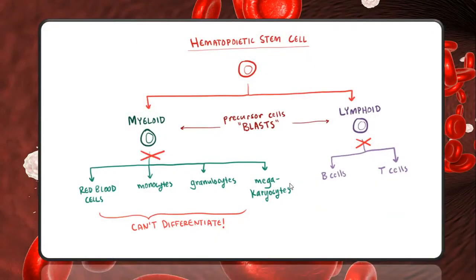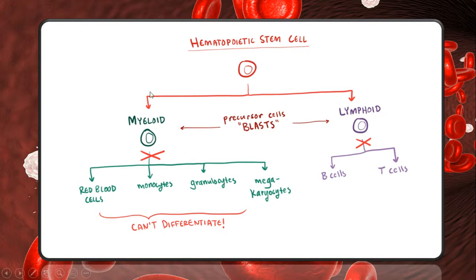Hematopoietic stem cells differentiate into myeloid stem cells or lymphoid stem cells — sometimes we call these precursor cells blasts. Myeloid stem cells further differentiate into red blood cells, monocytes, granulocytes, and megakaryocytes, while lymphoid stem cells differentiate into B cells and T cells. This process of hematopoietic stem cell differentiation is usually happening all the time, and new cells are always being created.